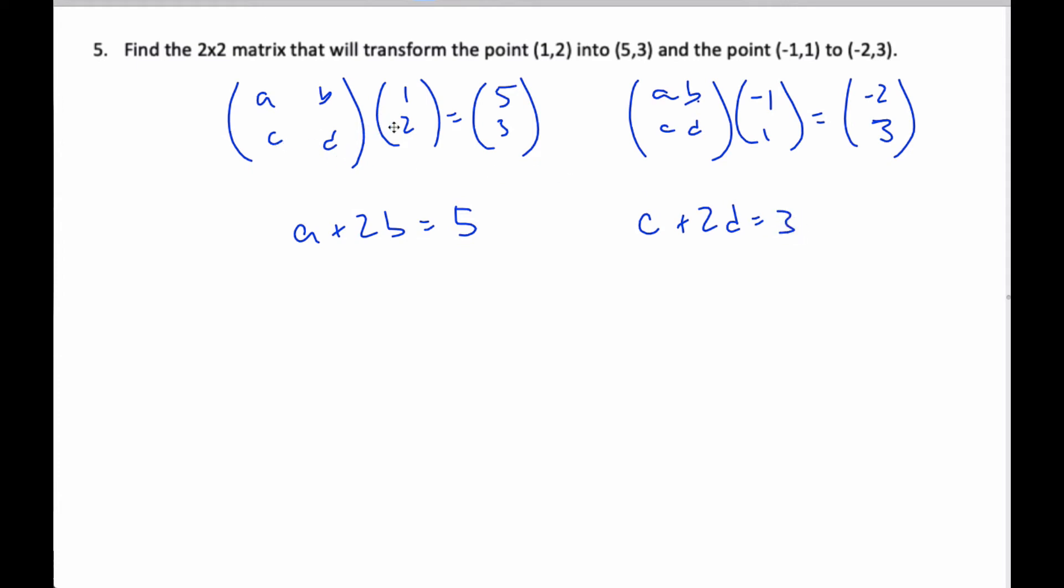And I also know that C plus 2D will equal 3. Okay, so that's from this bottom one. Again, if I look here, I go A and B times -1 and 1, so it's going to be -A plus B equals -2 from here. And similarly, -C plus D will equal 3.